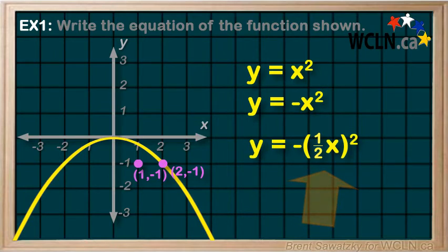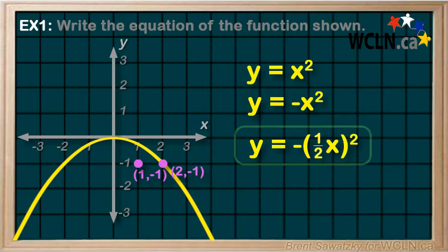The equation describing this graph would therefore be y equals negative, and then in brackets 1 half x all squared.